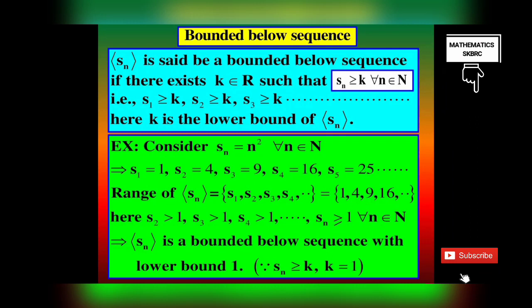Consider a sequence SN equal to N squared for all N belonging to N. Here S1 = 1, S2 = 4, S3 = 9, S4 = 16, and so on. The range of SN = {1, 4, 9, 16, 25, ...}. We have SN greater than or equal to 1 for all N belonging to N. That is, 1 is the lower bound of sequence SN. Therefore the sequence SN = N² is a bounded below sequence.